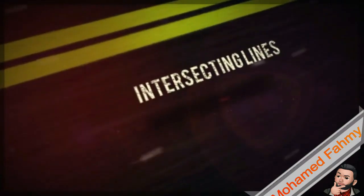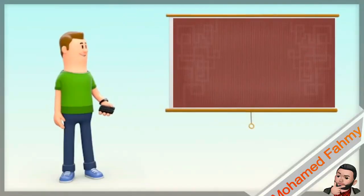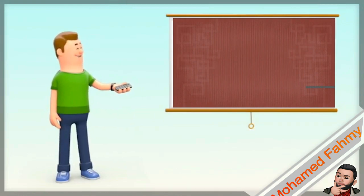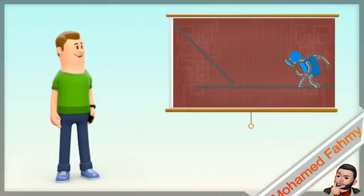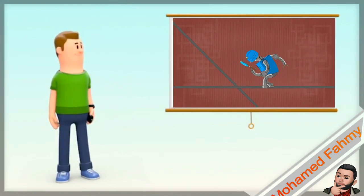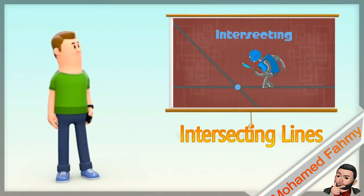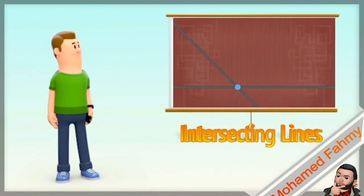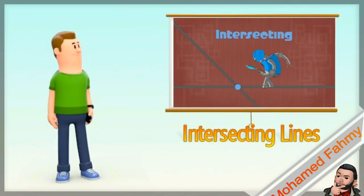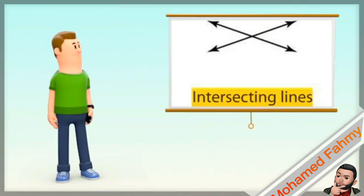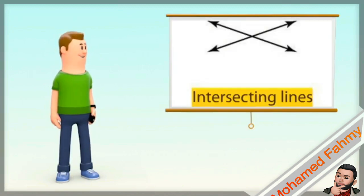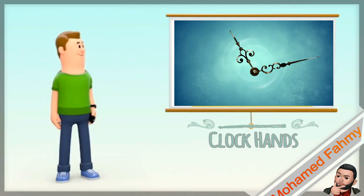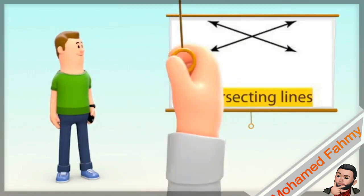Intersecting lines. As you see these two lines intersected at one point, they met together at one point, so we can call them intersecting lines. Can you please show us an example for intersecting lines? Yes, of course. The hands of the clock. Excellent.